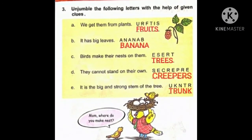Question number three: unjumble the following letters with the help of the given clues. Yahan pe hamein clue diya hai aur uska jo answer hai, use jumble kiya hua hai, mix kiya hua hai. Hamein use arrange karke answer banana hai. Question A: We get them from plants. Plants se hume kya milta hai? Fruits milta hai. So the correct answer will be fruits.